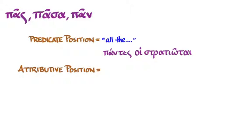In attributive position, pas, pasa, pan means the whole, as in, the whole country, he pasa hora. Again, that usage is just like English with whole, after the article, the whole country. Greek just uses the same word for both all and whole.